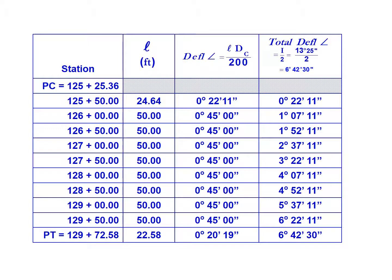And we'll find that our total deflection is six degrees, 42 minutes, 30 seconds, which is equal to half of our deflection angle. And that's our important check when we're working with a deflection table.